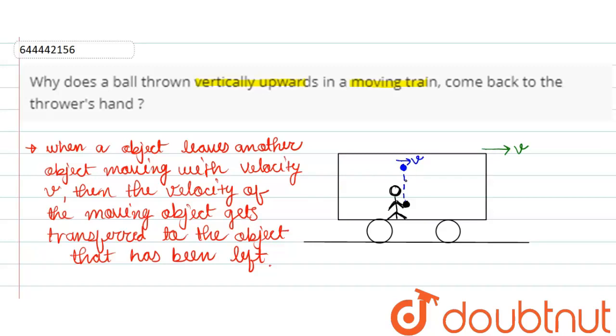We know that as the ball is thrown vertically upwards, the acceleration of the ball is vertically downwards, that is equal to g. We can clearly see here that there is no acceleration in horizontal direction. Thus, the ball will also travel with velocity v in horizontal direction, and the man is also traveling with velocity v in horizontal direction.